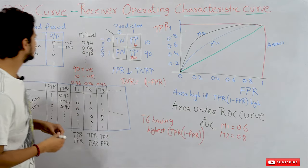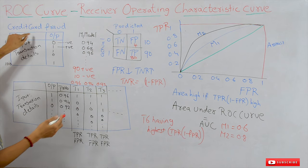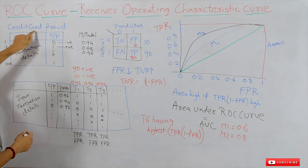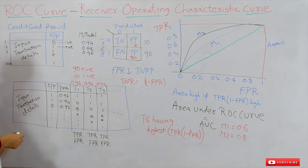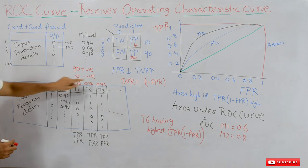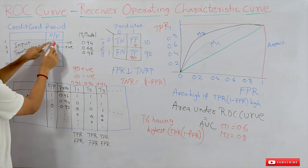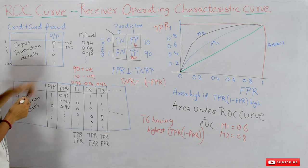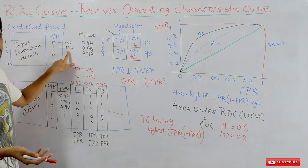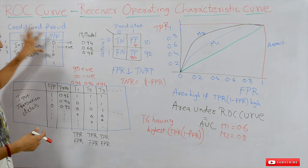The example we consider here is the same one from our previous confusion matrix class — credit card fraud detection datasets. The input is transaction details. We are taking 100 transactions: 90 are positive transactions and 10 are negative transactions. 1 is taken as positive (genuine transaction) and 0 is taken as negative (fake transaction).